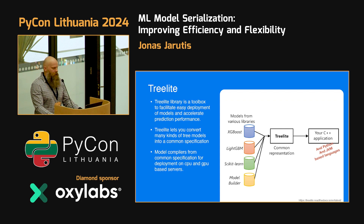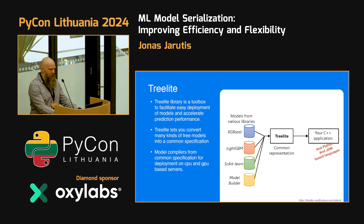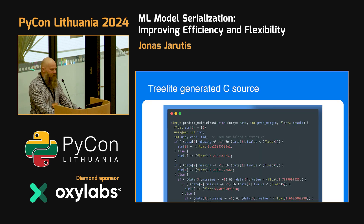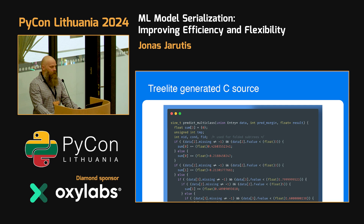There is this very interesting library called TreeLite. It's essentially a toolbox to convert tree-based models from different frameworks used to train them into a common representation, and then compile them to a shared library. It provides tooling to use that shared library and run inference from various languages — you can call it from C++, Python, or JVM languages. This is what a tree compiled and transpiled to C++ looks like using the TreeLite library — essentially, how we can represent tree-based models in code is just a bunch of if-else statements. We check if the value is missing, if the value is lower or higher than some threshold, and based on that we select branches.